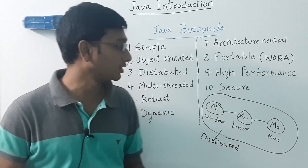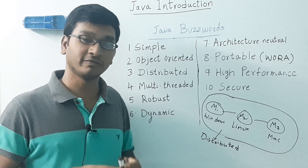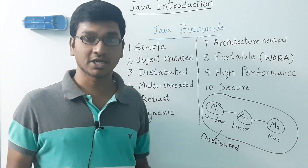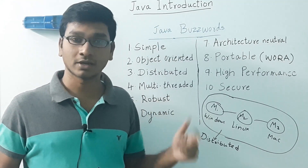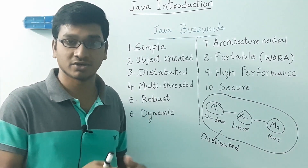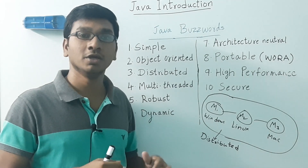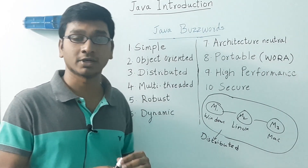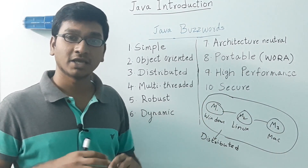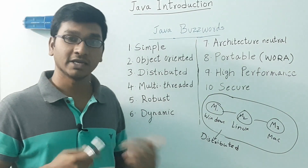Next comes high performance. When we develop any application, performance is an important factor. Java achieves superior performance in two ways. First, it has an automatic garbage collector that runs as a background thread, making sure memory is available whenever required, leading to better performance. Second, for applications that need large amounts of computing power, the sections requiring intensive computation can be separated and rewritten in native machine code and later interfaced with the Java platform, again leading to better performance.